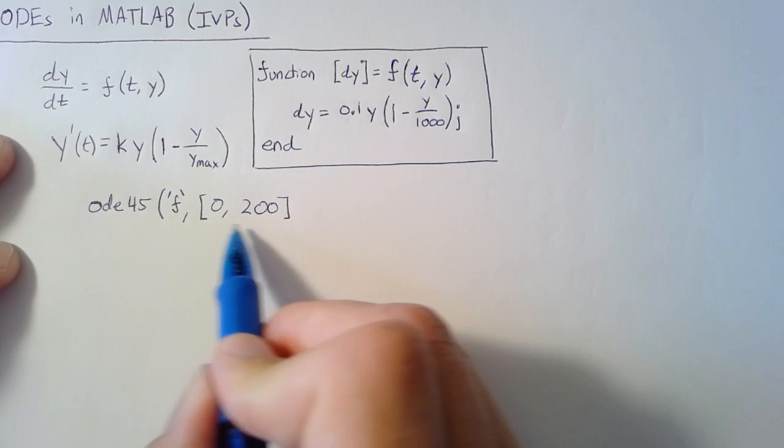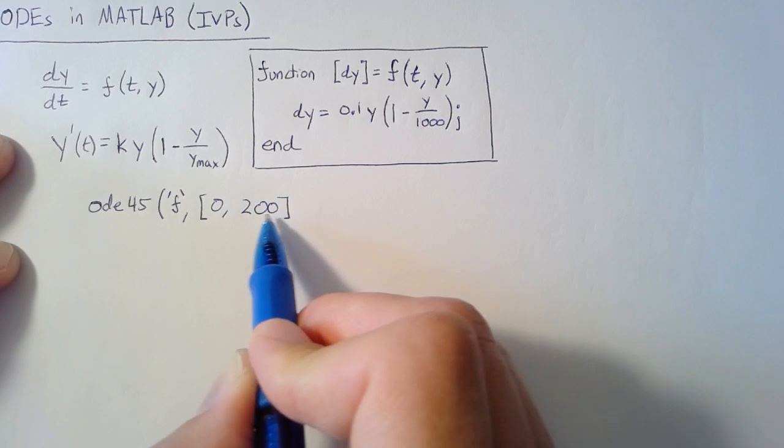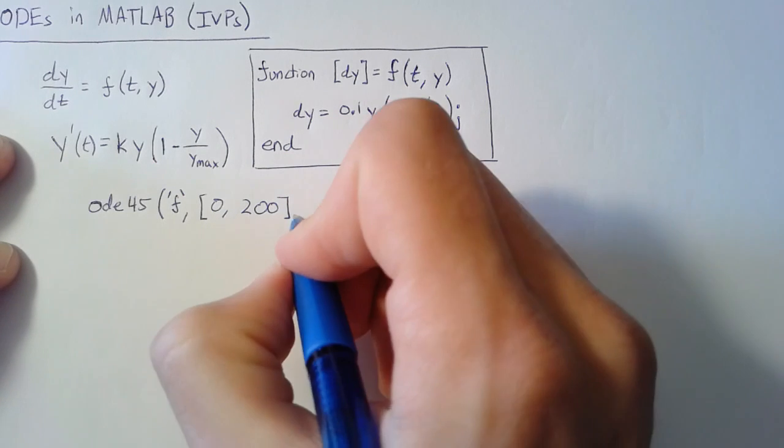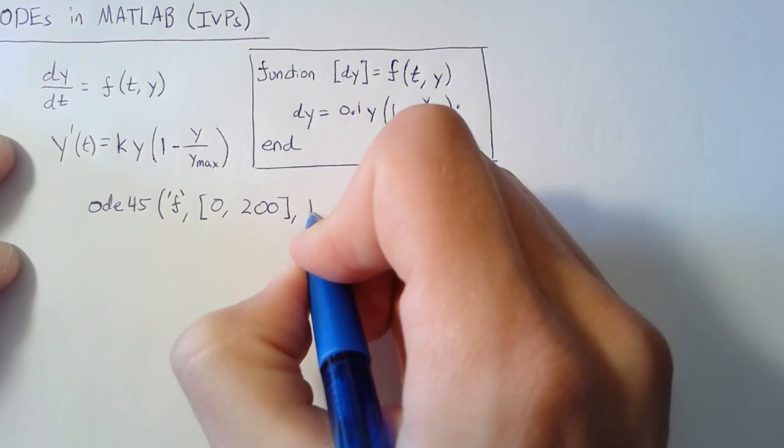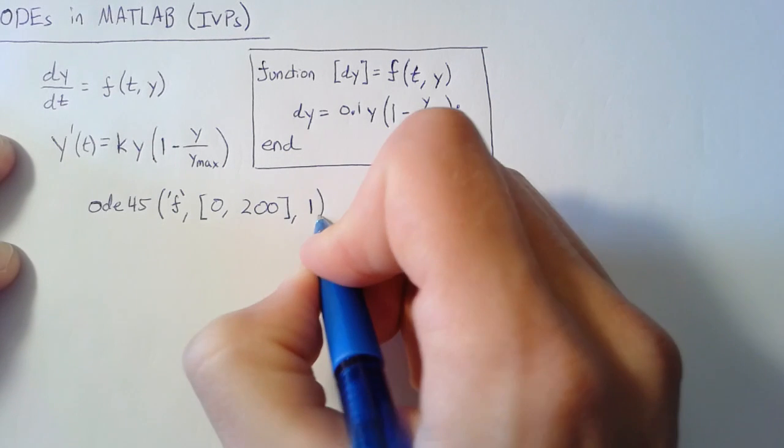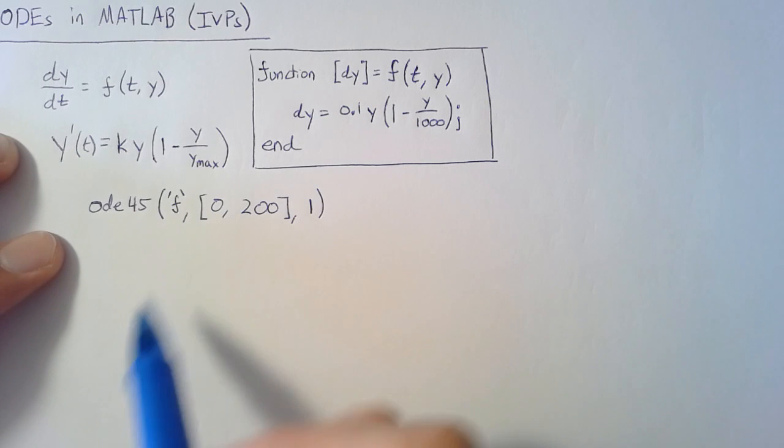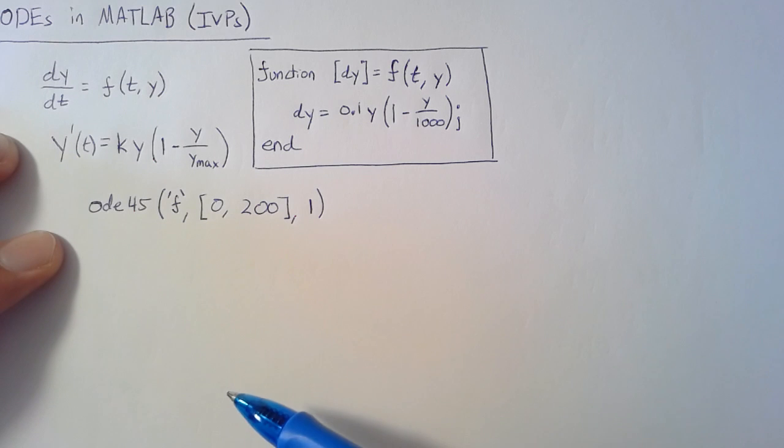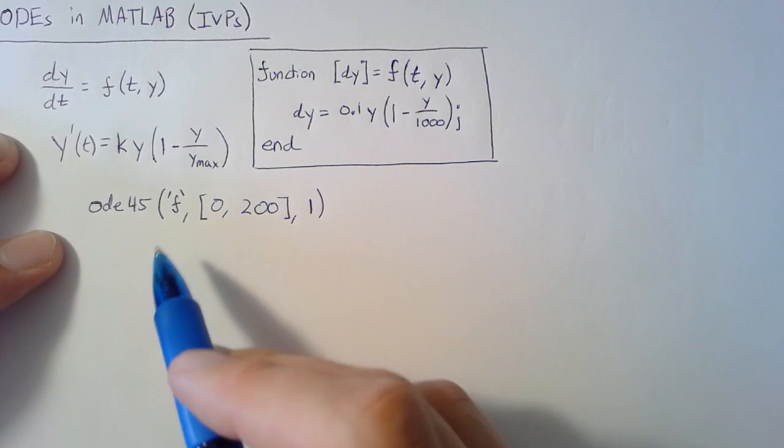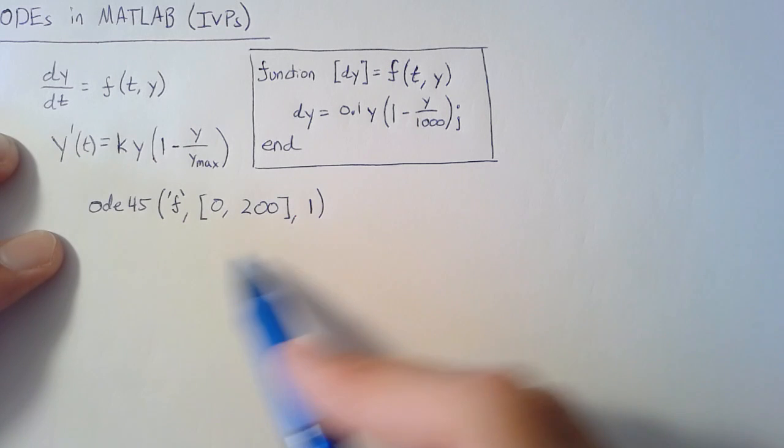For instance, this might be from the starting point to 200 years later. We're going to set our initial population to 1. If you execute this command, MATLAB will automatically plot the result - the time versus population plot. It should be a nice logistic plot where it starts off exponential and then reaches some upper bound.